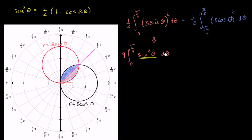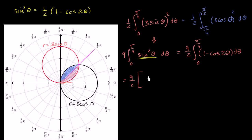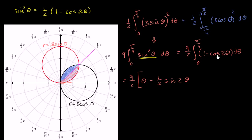So if we replace sine squared theta with that identity, taking the one half out, we get nine halves times the definite integral from zero to pi over four of one minus cosine two theta d theta. This is going to equal nine halves times theta minus one half sine of two theta. You could do u-substitution, but you can verify: the derivative of sine of two theta is two cosine of two theta, and multiplying by negative one half gives negative one.